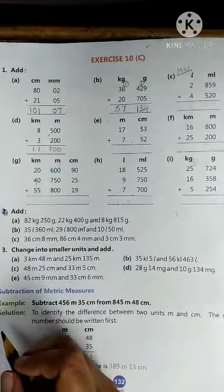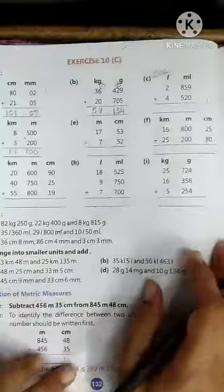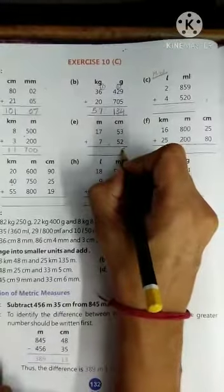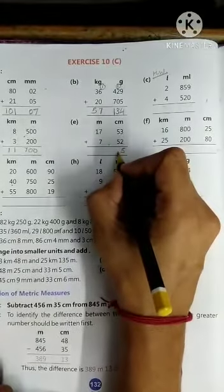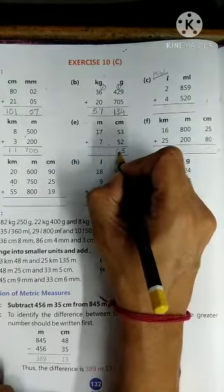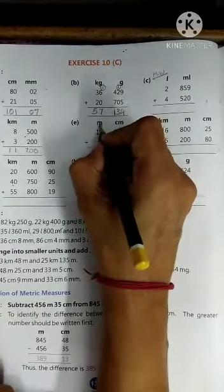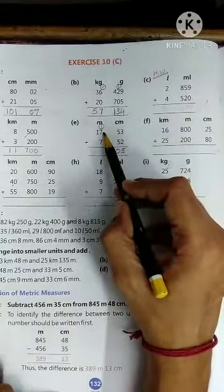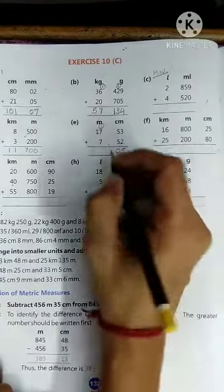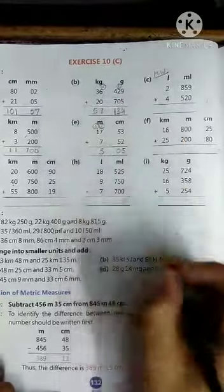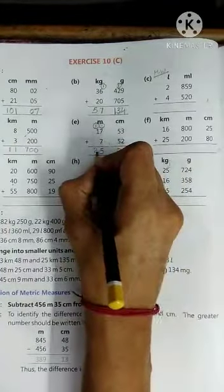Am I clear to everyone? Now come to the E part. 3 plus 2 is 5, 5 plus 5 is 10, but we cannot write together 10. So 0 here and 1 carrying over. 1 plus 7 is 8, 8 plus 7 is 15, 5 and 1 carrying over. 1 plus 1 is 2.